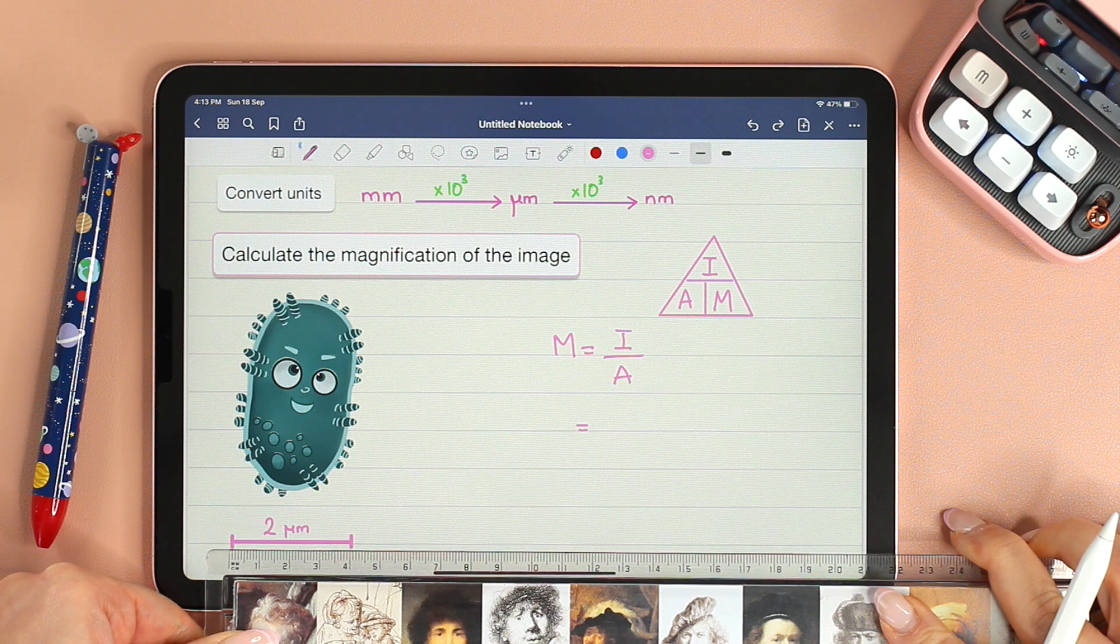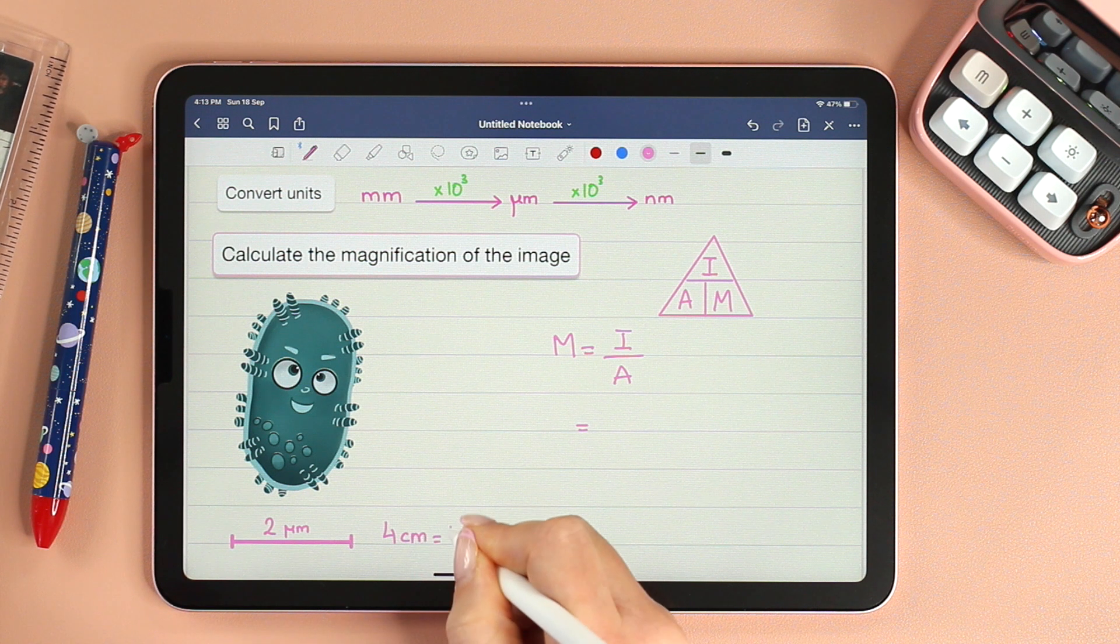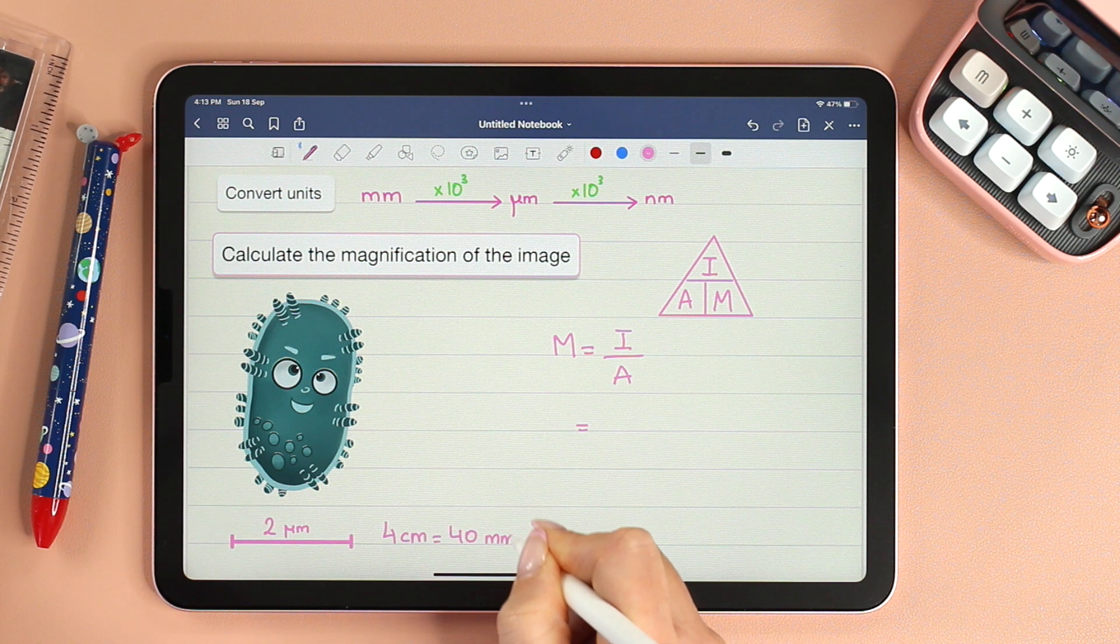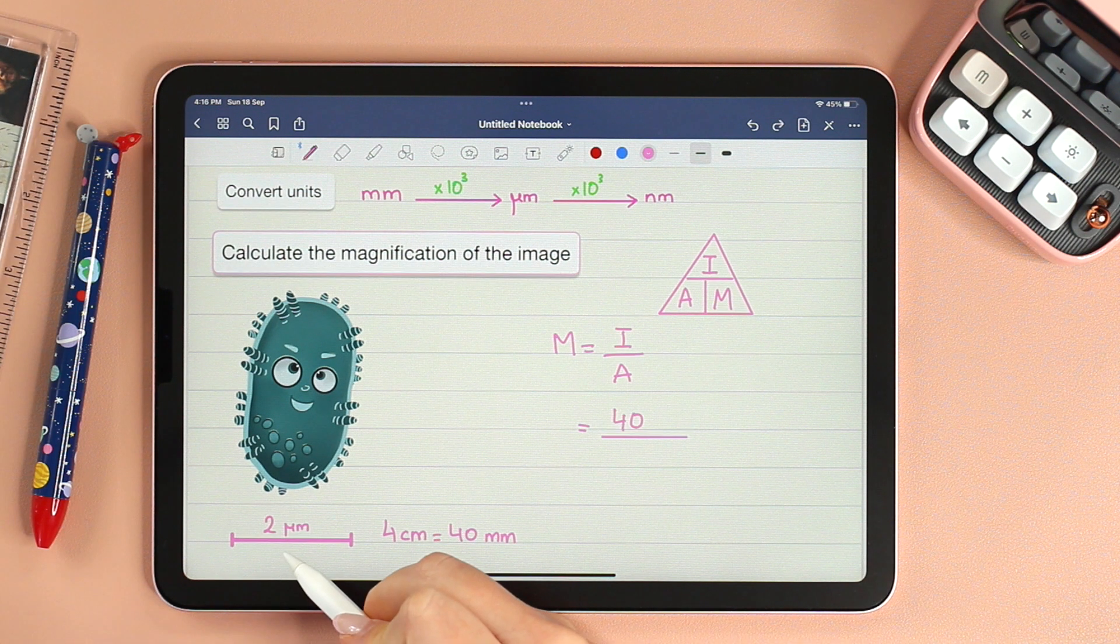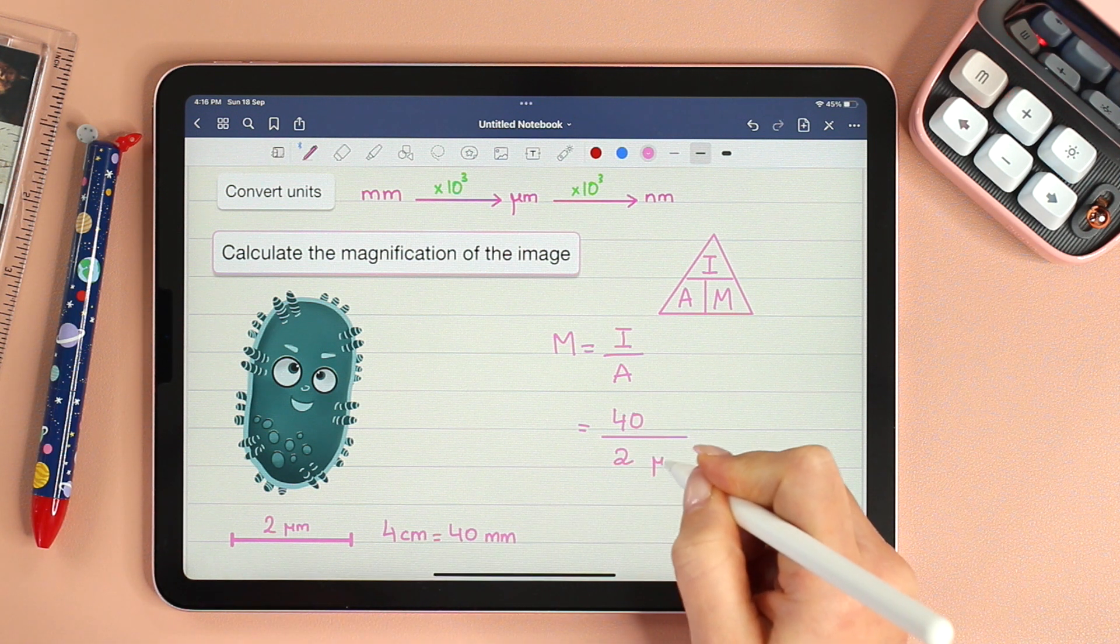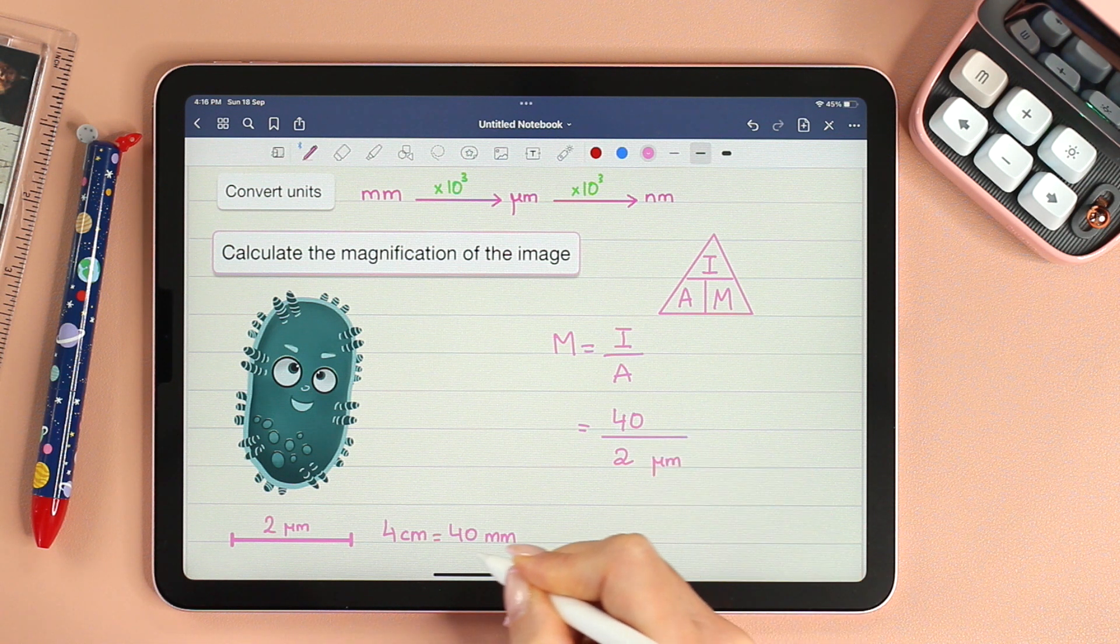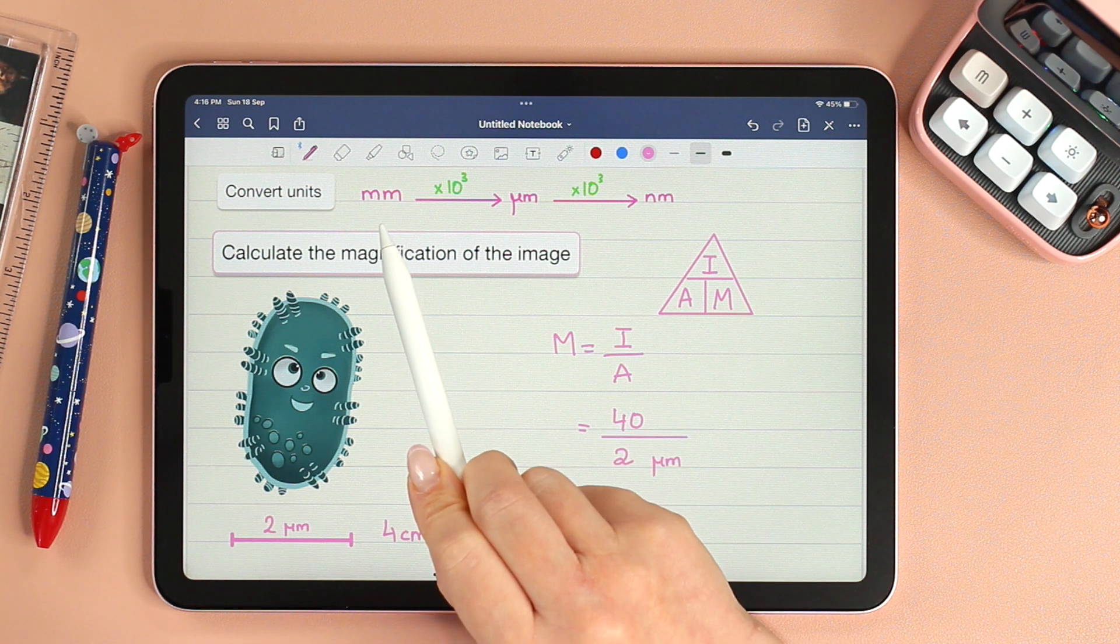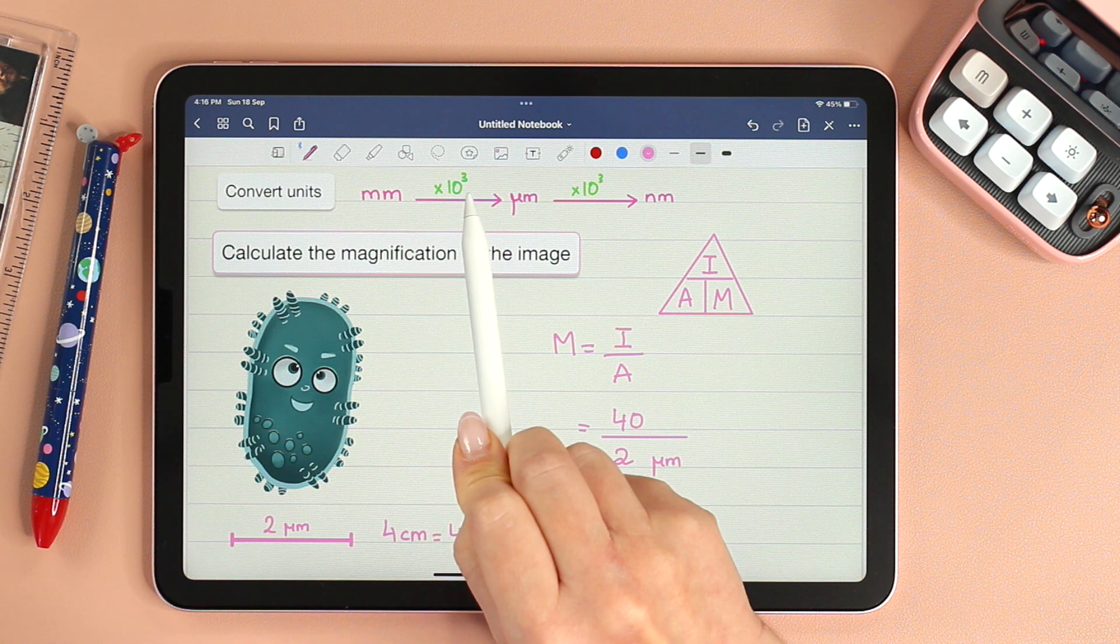And I can read 4 centimeters. Now 4 centimeters is 40 millimeters—remember, just multiply it by 10. The actual size of the scale bar is 2 micrometers. So let's write that here: 2 micrometers. This 40 right here is in millimeters, so to convert from milli to micro we need to multiply by 10 to the power of 3.